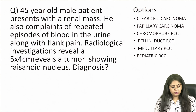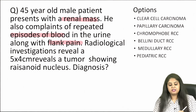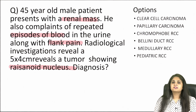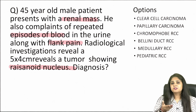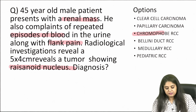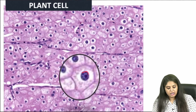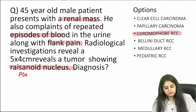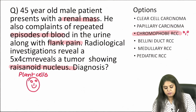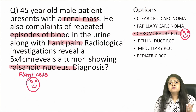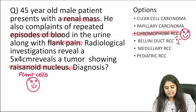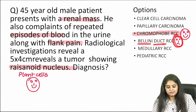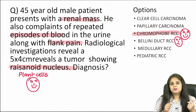The next case again has the same RCC triad, but here you see a raisinoid nucleus — a dark blue nucleus with a perinuclear whitish area (perinuclear halo) — in RCC, that is known as a plant cell. Plant cell appearance is seen with chromophobe RCC, which has the best prognosis among RCC subtypes. The worst prognosis in RCC is bellini duct (collecting duct) RCC, remembered as 'haw bellini dance' — haw for bad prognosis.